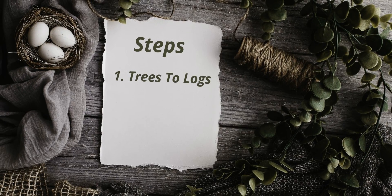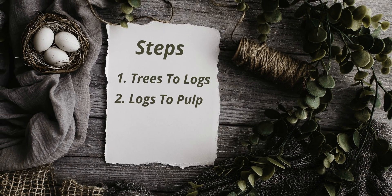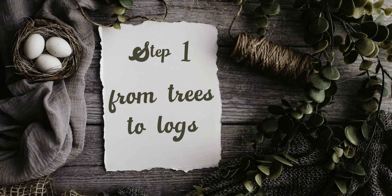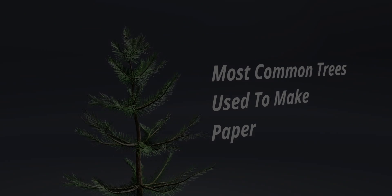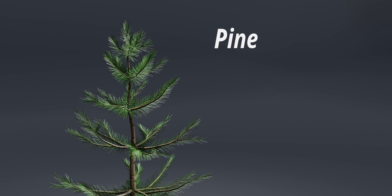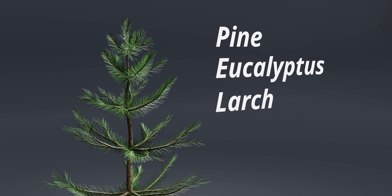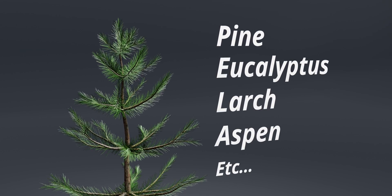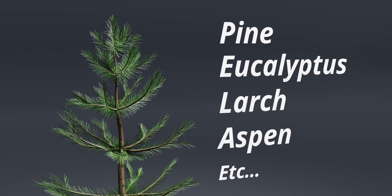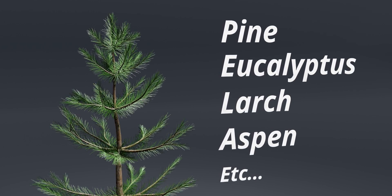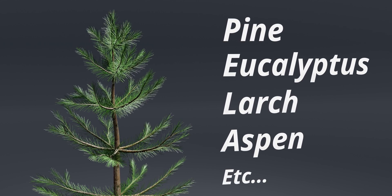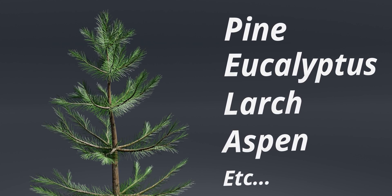From trees to logs, from logs to pulp, and from pulp to paper. Step 1: Trees to logs. The most common trees used to make paper are pine, eucalyptus, larch, aspen, etc., because the cellulose fibers in the pulp of these trees are longer, making a stronger paper.